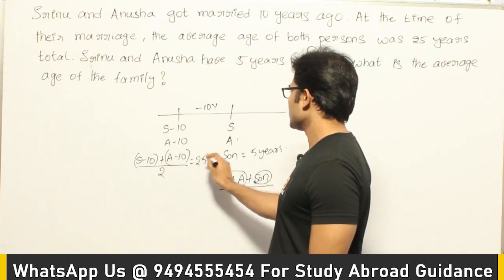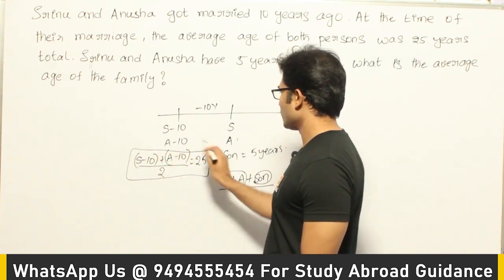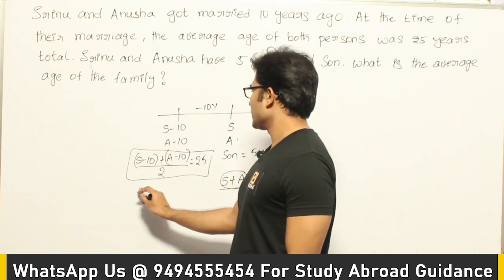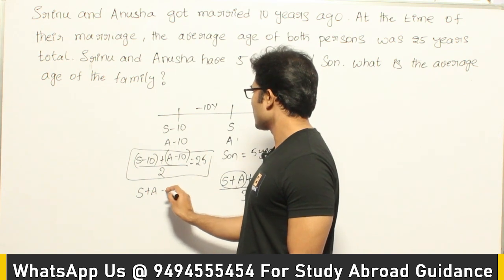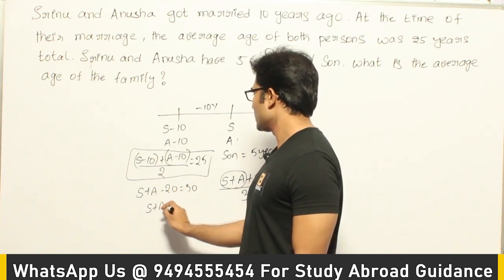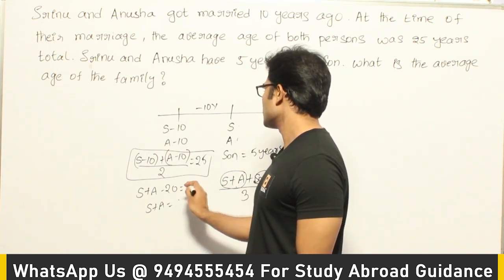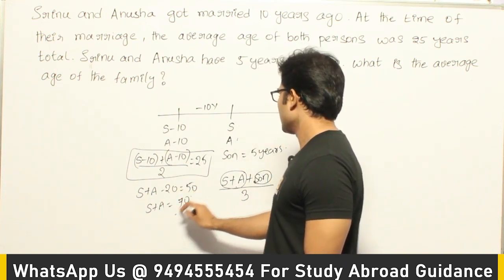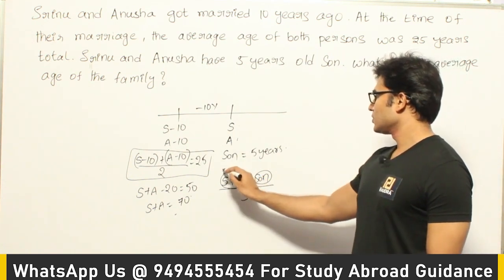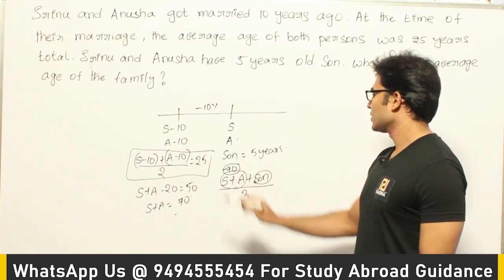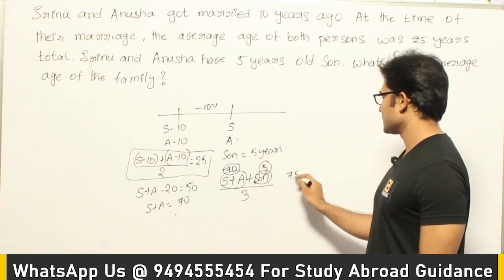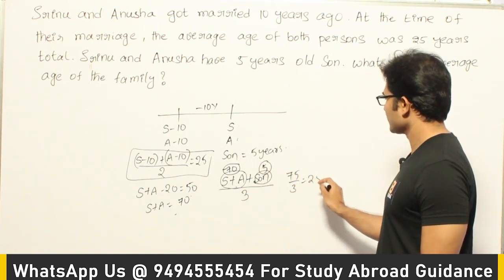From this equation: S + A − 20 = 50, so S + A = 70. The son's age is 5, so the total is 75. The average age of the family is 75 divided by 3, which equals 25.